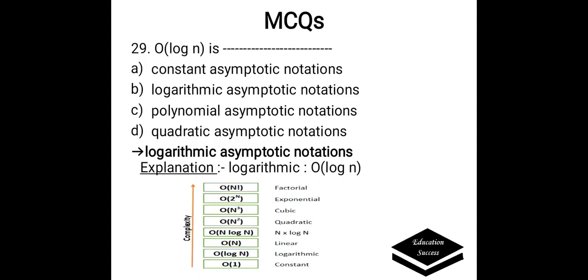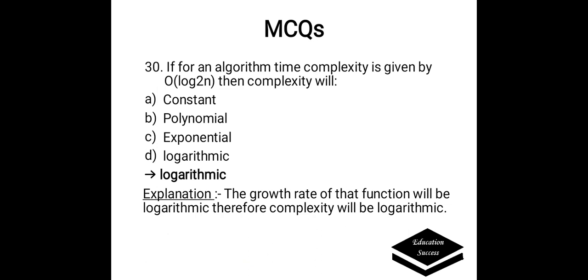O(log N) is: a) constant asymptotic notation, b) logarithmic asymptotic notation, c) polynomial asymptotic notation, or d) quadratic asymptotic notation. Correct answer is logarithmic asymptotic notation. If for an algorithm time complexity is given by O(log N), then complexity will be logarithmic. The growth rate of that function will be logarithmic, therefore complexity will be logarithmic.